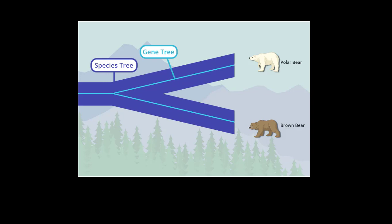To make a tree more accurate, it's important to incorporate multiple gene trees. Species have many genes, and each gene has its own evolutionary history. Some genes change very slowly — often these genes code for proteins with essential functions, which don't change much over time.